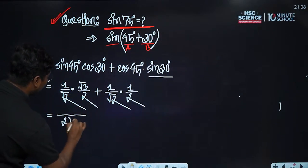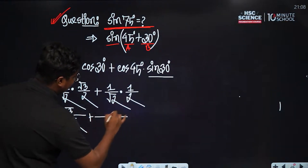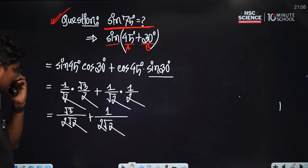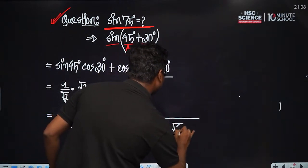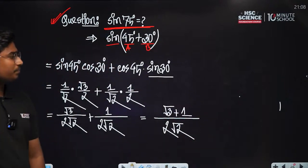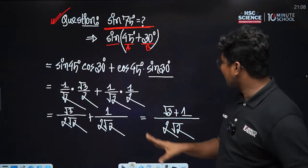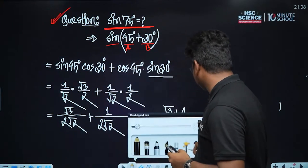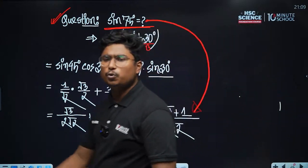We will make: 2 root 2. And 1 into root 3 is root 3. So (root 3 + 1) divided by 2 root 2. Finally this is sin(75°). Sin(75°) = (root 3 + 1) divided by (2 root 2). The calculator confirms this is correct.